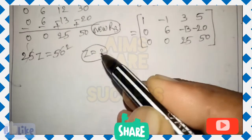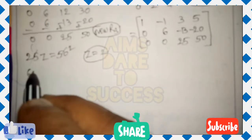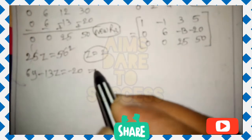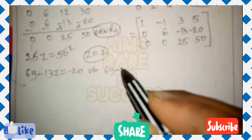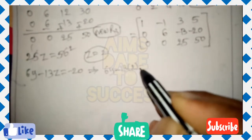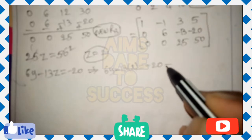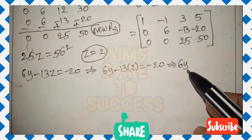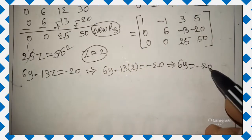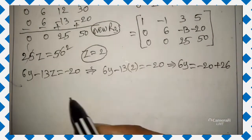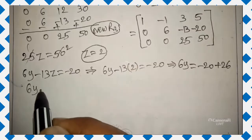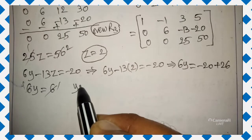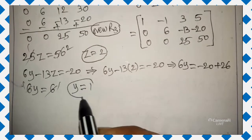From row 2, the equation is 6y minus 13z = minus 20. Substituting z = 2: 6y minus 13×2 = minus 20, so 6y minus 26 = minus 20, giving 6y = minus 20 plus 26 = 6. Therefore y = 1.